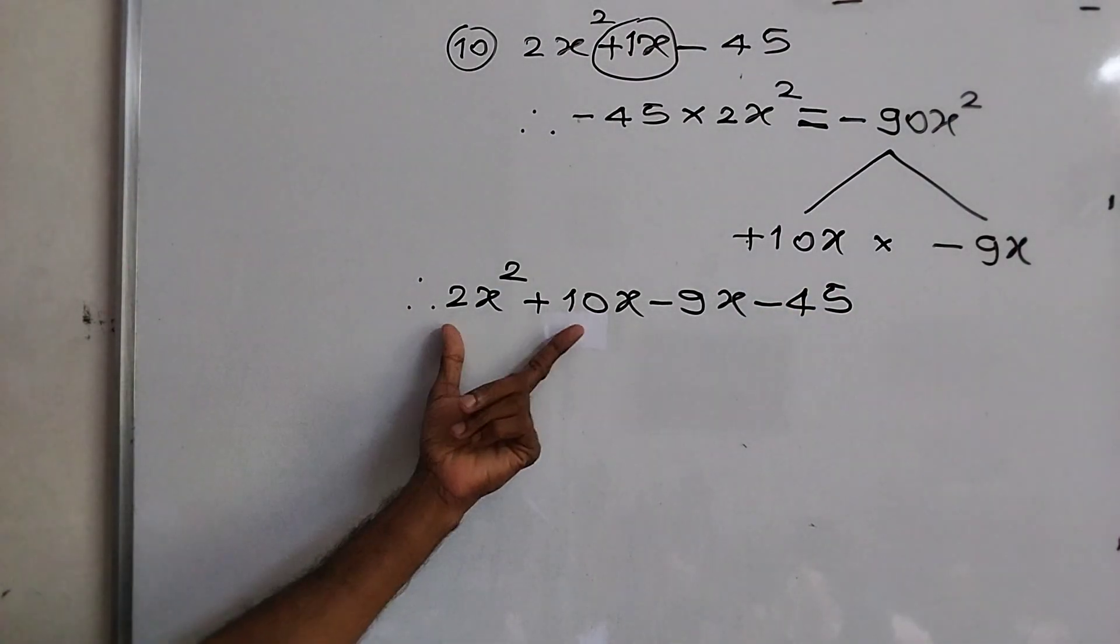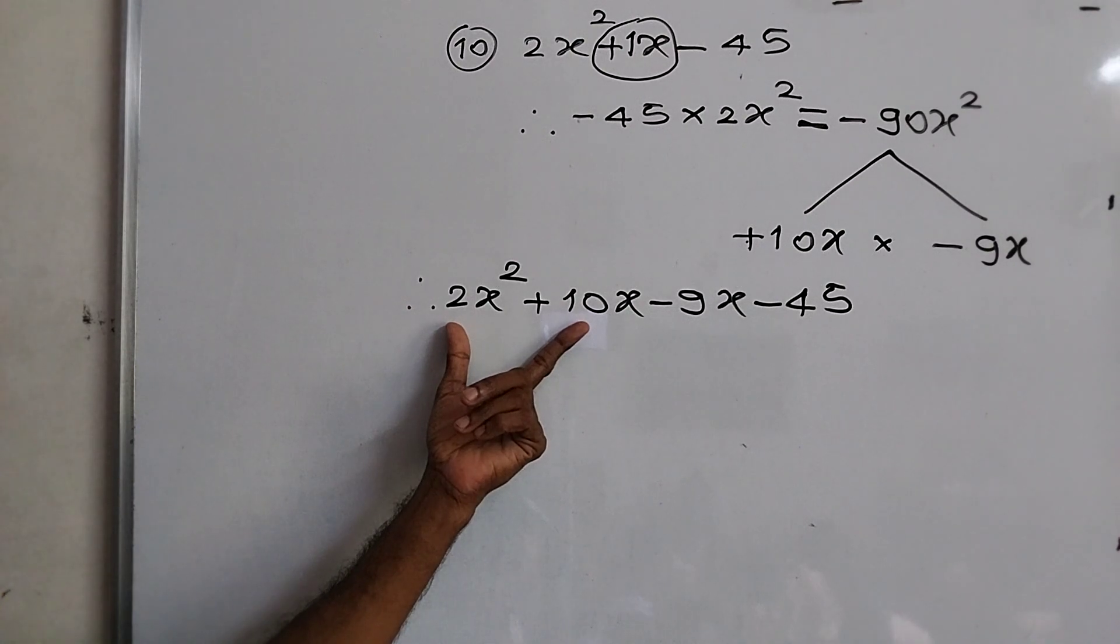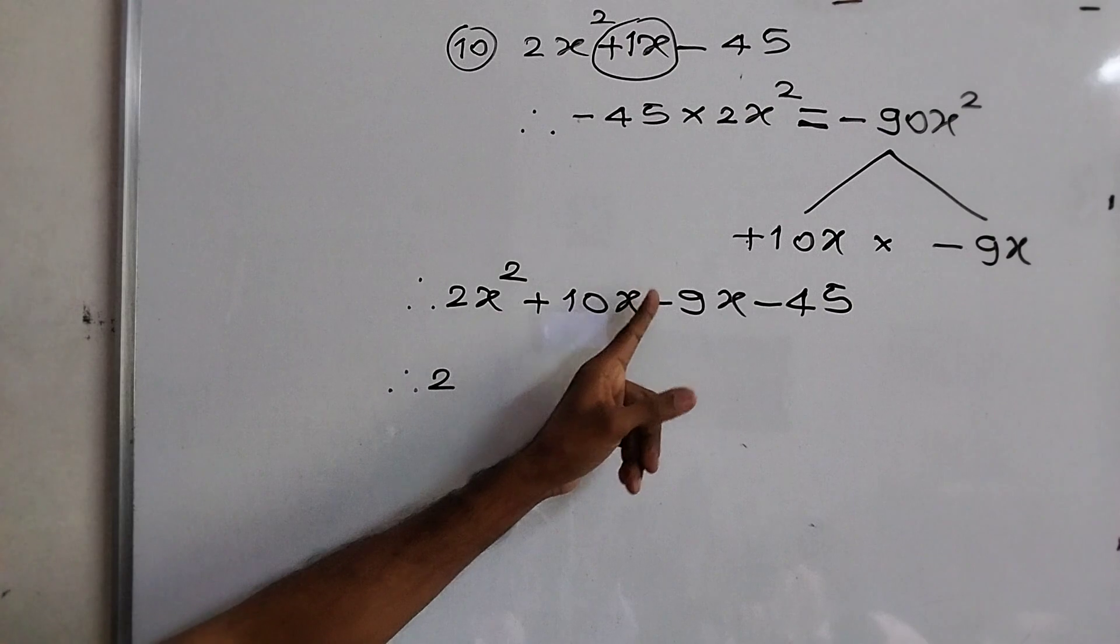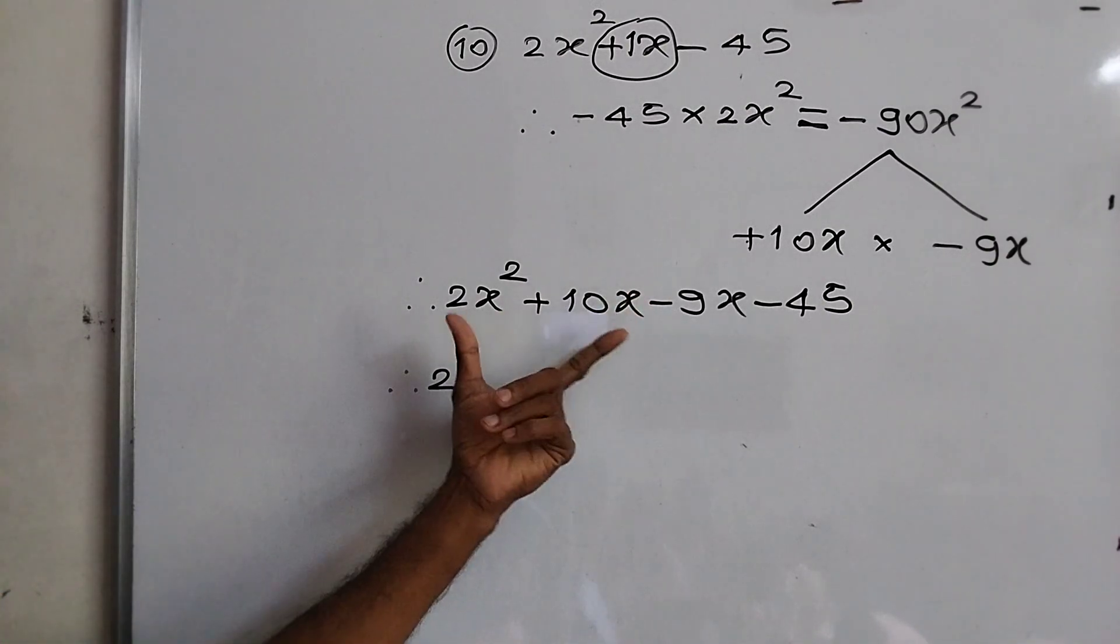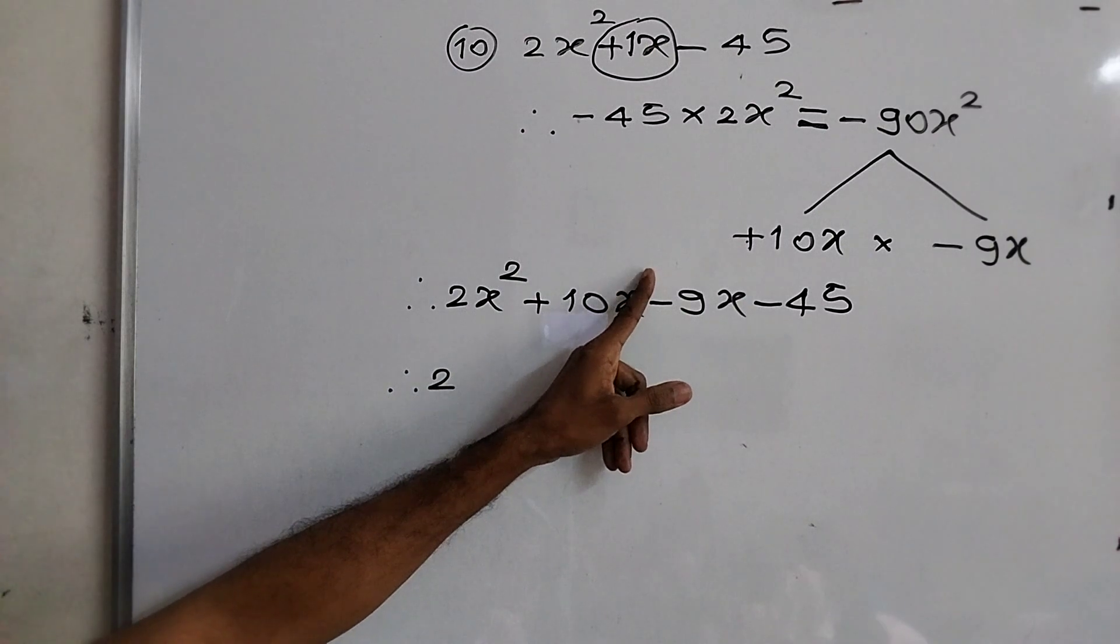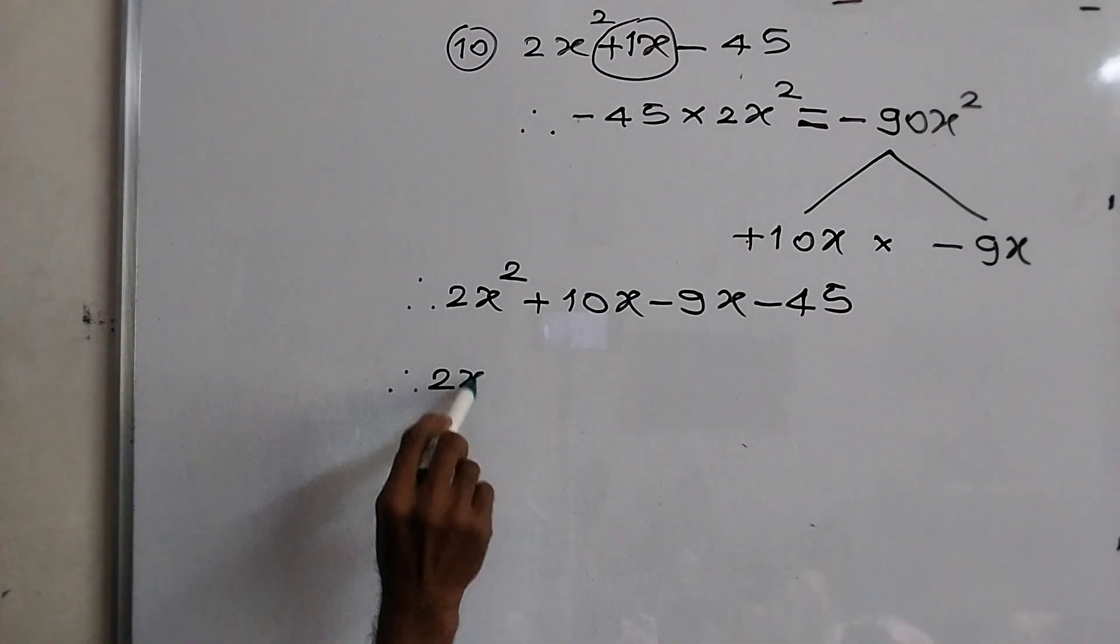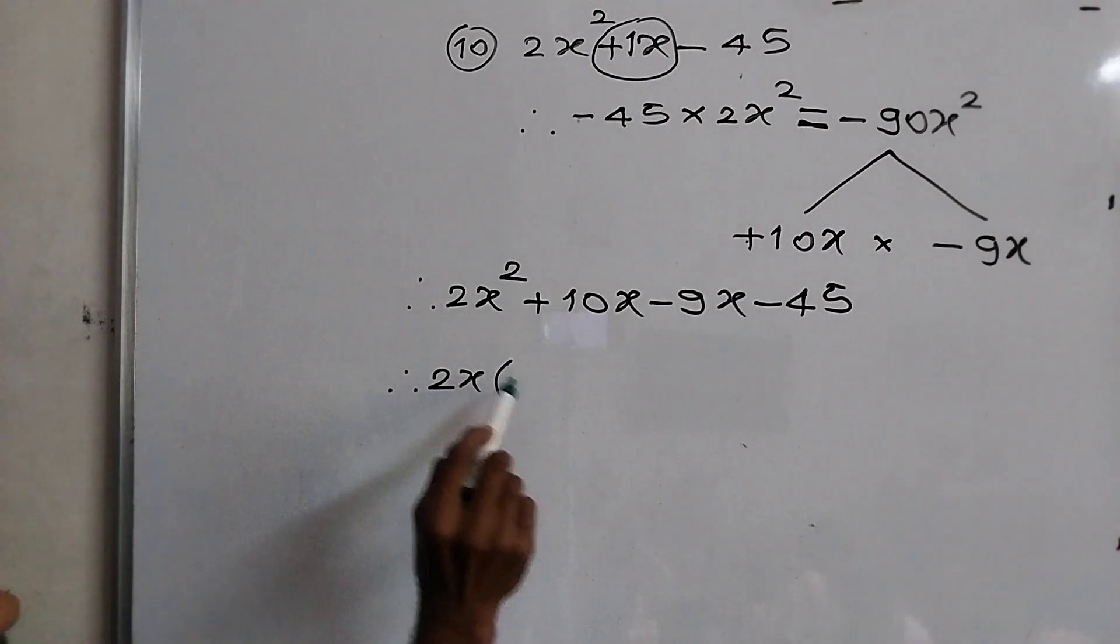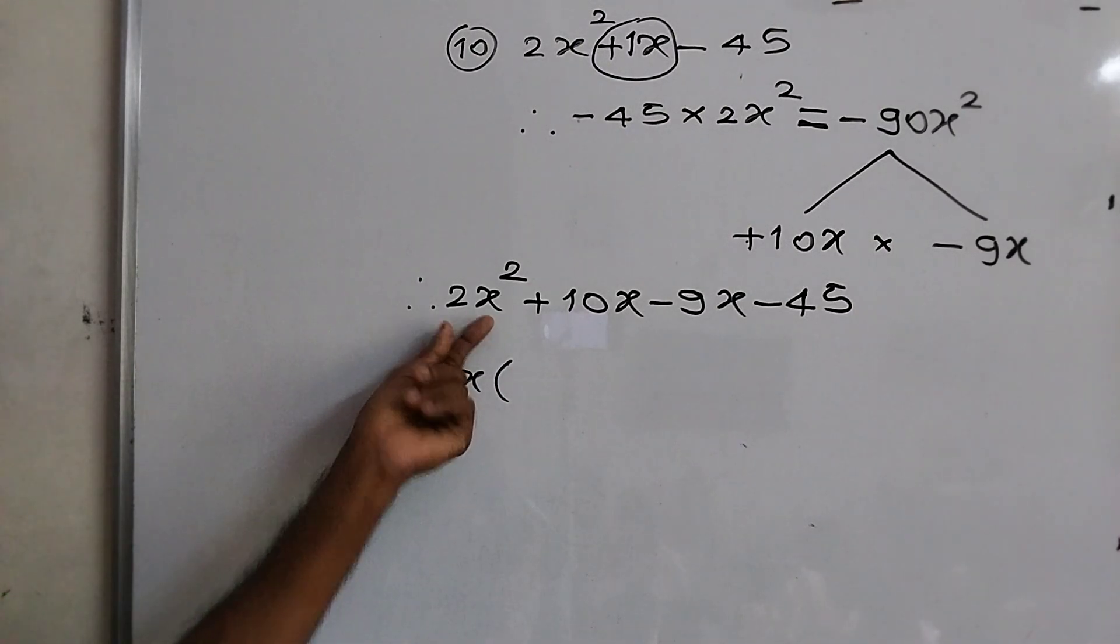Now here, numbers 2 and 10 comes in table of 2. So 2 is common. Then variable, I told, minimum index or power or degree. Here are 2 and here are 1, means 1 is smaller. So x common. 2 and x common. We have taken 2x common. Then what is left? x.